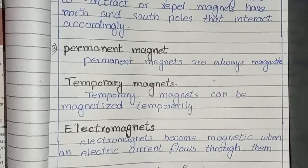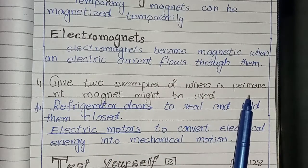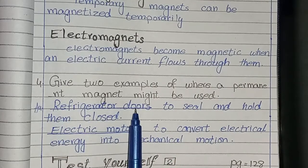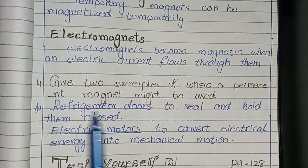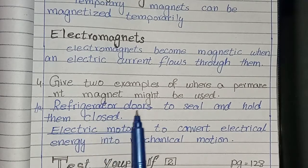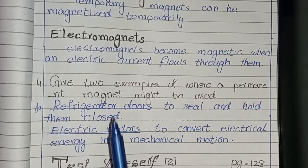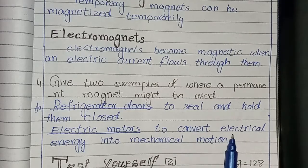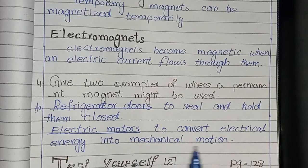Question number four: give two examples of where a permanent magnet might be used. Refrigerator doors — to seal and hold them closed. Electric motors — to convert electric energy into mechanical motion.